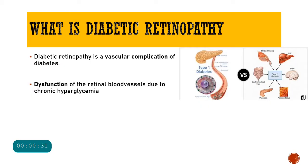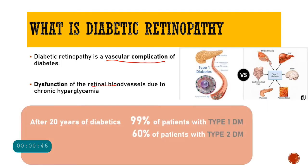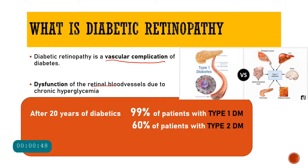What is diabetic retinopathy? Diabetic retinopathy, also abbreviated as DR, is a vascular complication of diabetes — basically a dysfunction of the retinal blood vessel due to chronic hyperglycemia. It is proved by various studies that after 20 years of diabetes, 99% of type 1 diabetes mellitus patients will develop DR, and 60% of those with type 2 diabetes mellitus will develop diabetic retinopathy.